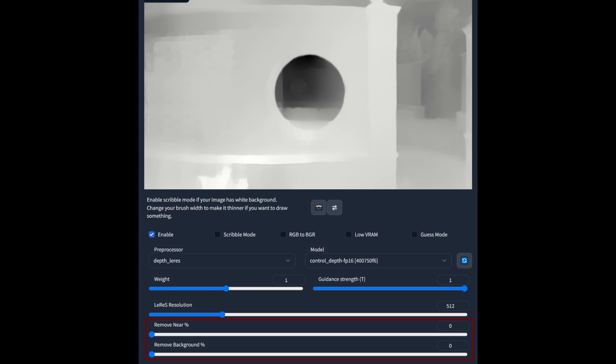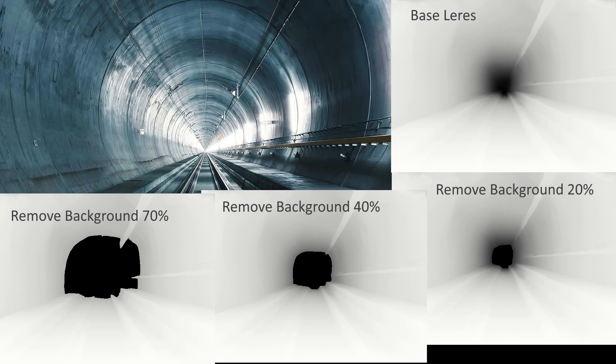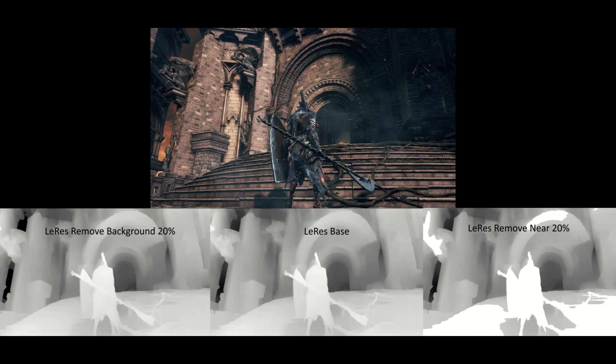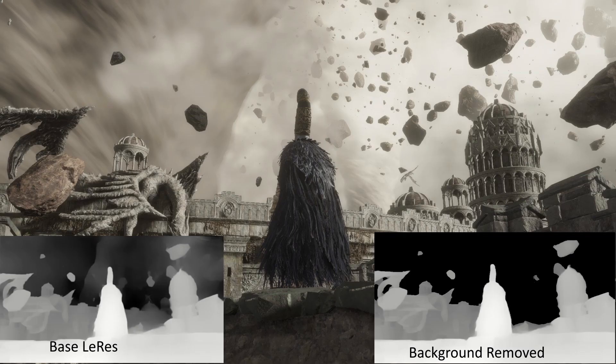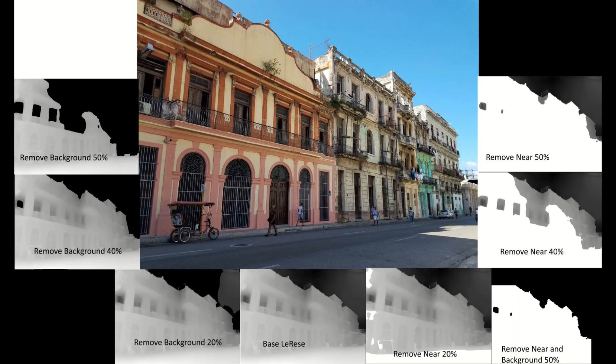The LeRes preprocessor also has two sliders for removing the background and removing near. Removing background takes the darker colors and converts them into a uniform black. The slider represents the percentage of the black-white color scale and not the percentage of the image. This means that an image in an enclosed space, like a room, will be impacted less by removing the background compared to an image out in the open. However, this same image will be more impacted by removing near. This feature can be useful if you need to use LeRes to capture details on objects far away, but the map has too many details to get a good generation. Similarly, the remove near slider takes lighter colors and converts them into a uniform white. This does not seem nearly as useful as removing the background, but you could use it to make a window or door really pop.